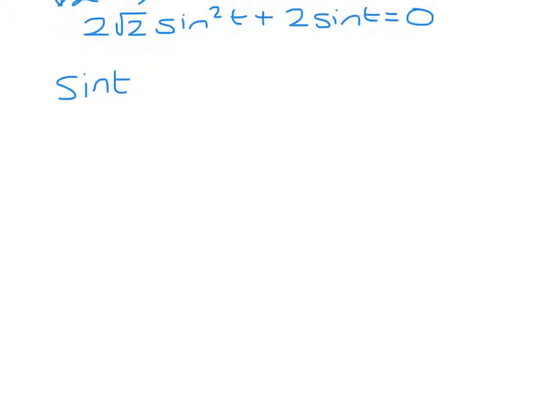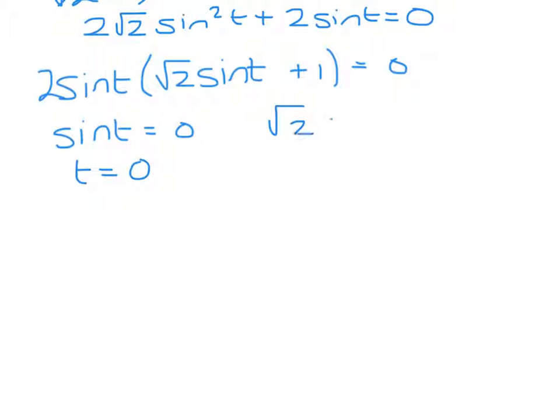Factorizing, 2 sin t(root 2 sin t plus 1) equals 0, so we have sin t equals 0, which gives t equals 0 as the first answer out of the calculator.